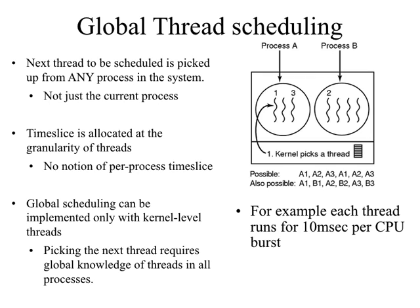The other model is global thread scheduling. When it is time to pick the next thread, the CPU scheduler picks the most eligible thread from any process in the system — not just the current process — with the goal of making the most efficient use of the CPU. For example, if process A gives up the CPU, you might pick a thread from process B because it has the highest priority. Global thread scheduling can only be implemented as kernel-level threads, because only the OS has a global view of all threads across all processes.